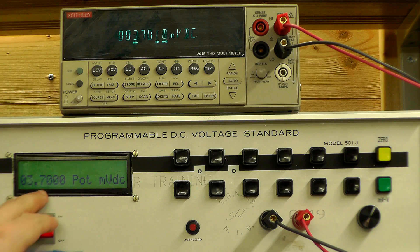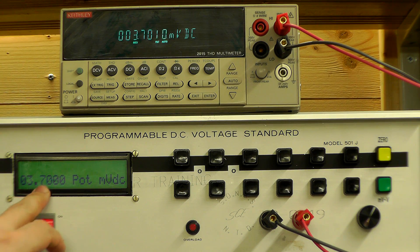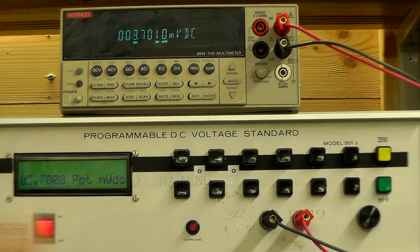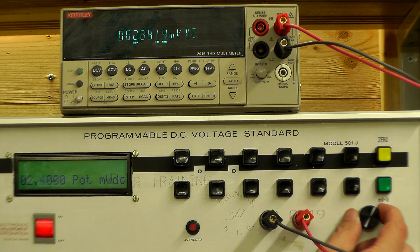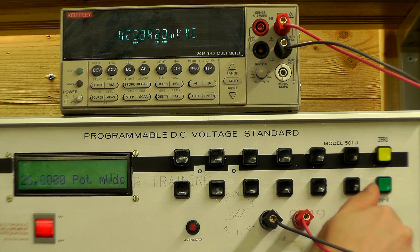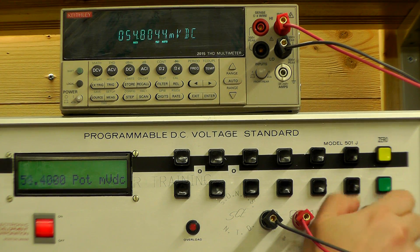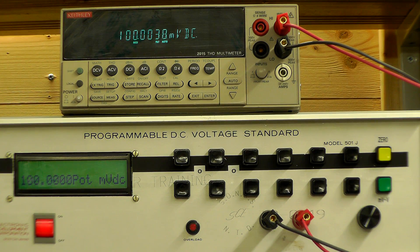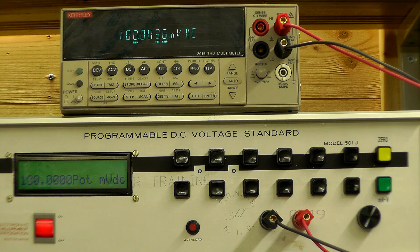Again we only have control over one decimal place. The other three there are fixed. But those three are being sent to the 501J via the Arduino. So you've basically got control from 0 millivolts all the way up to 100 millivolts as is the spec of the 501J. So there we go. 100.000.